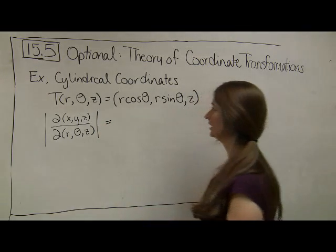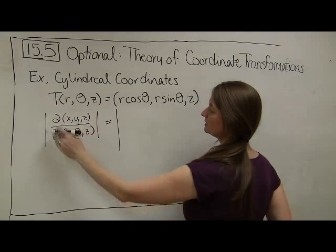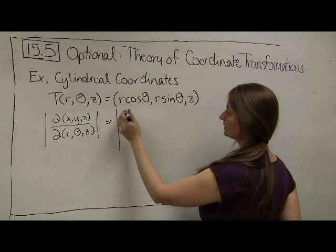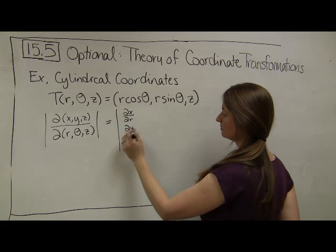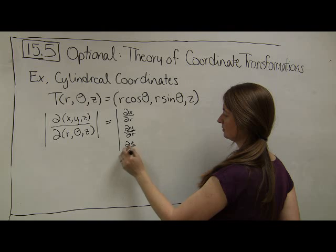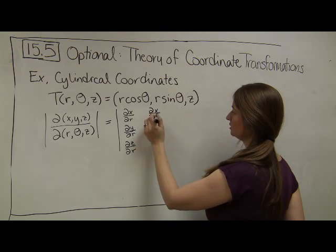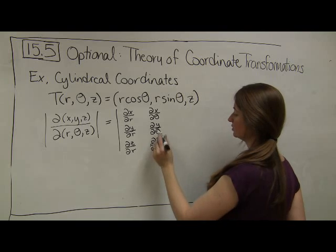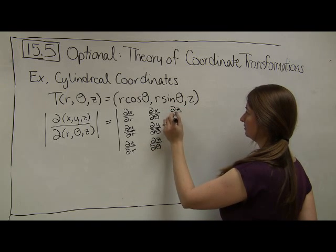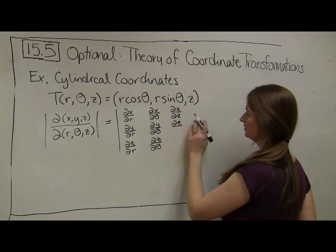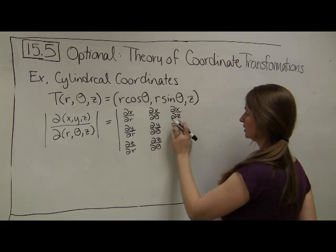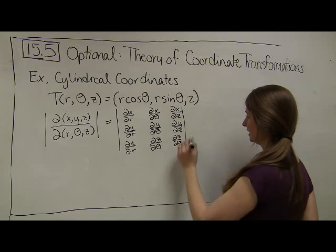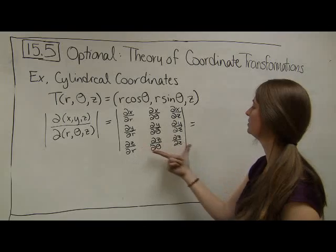This is some theory that maybe you haven't seen, but I think it makes sense. It's all of my partial derivatives in matrix form: the derivative of my X component with respect to r, the derivative of my Y component with respect to r, and the derivative of the Z component with respect to r. The next column is the derivative of X with respect to theta, the derivative of Y with respect to theta, and the derivative of Z with respect to theta. The final column is the derivative of X with respect to z, the derivative of Y with respect to z, and the derivative of Z with respect to z.